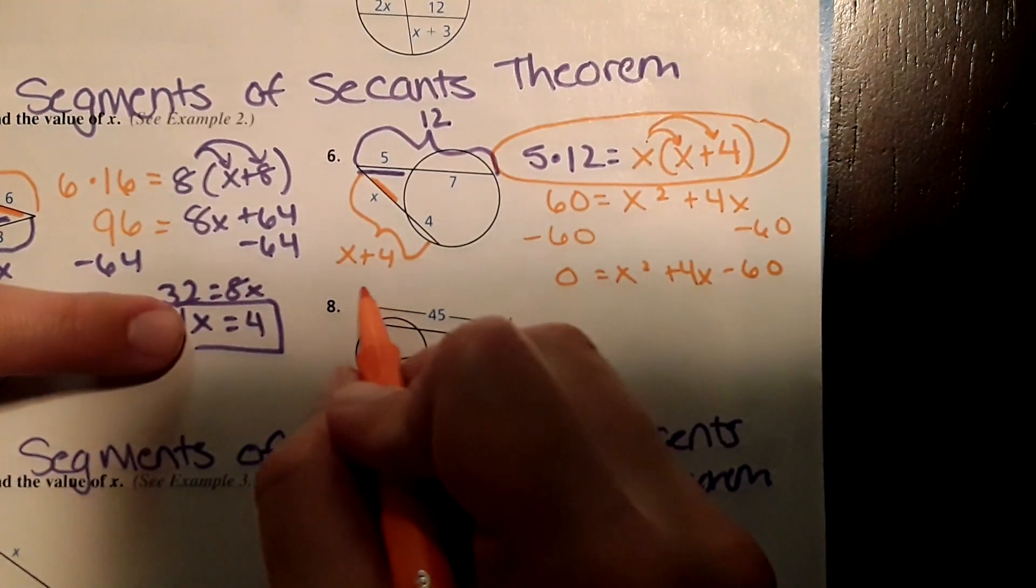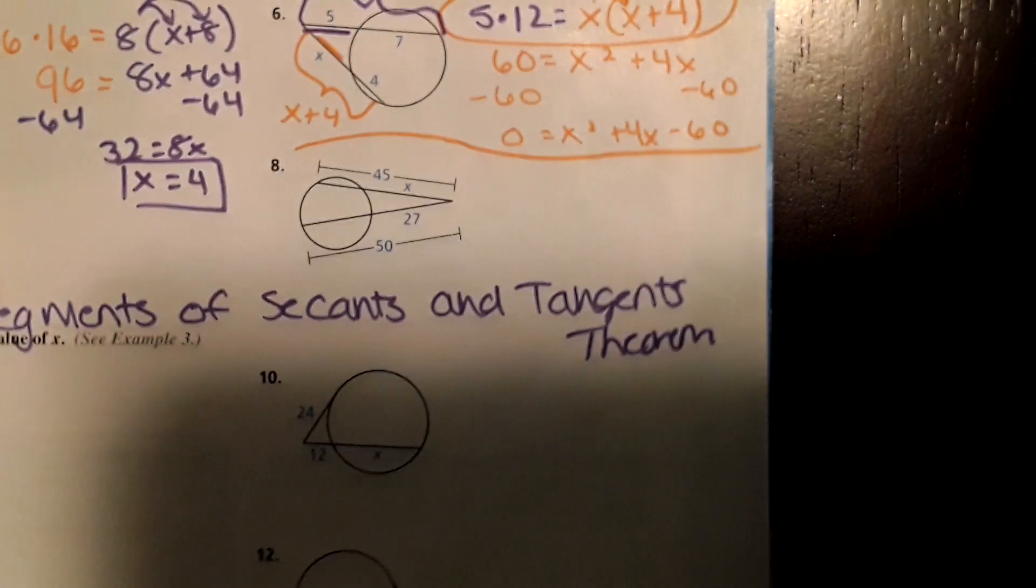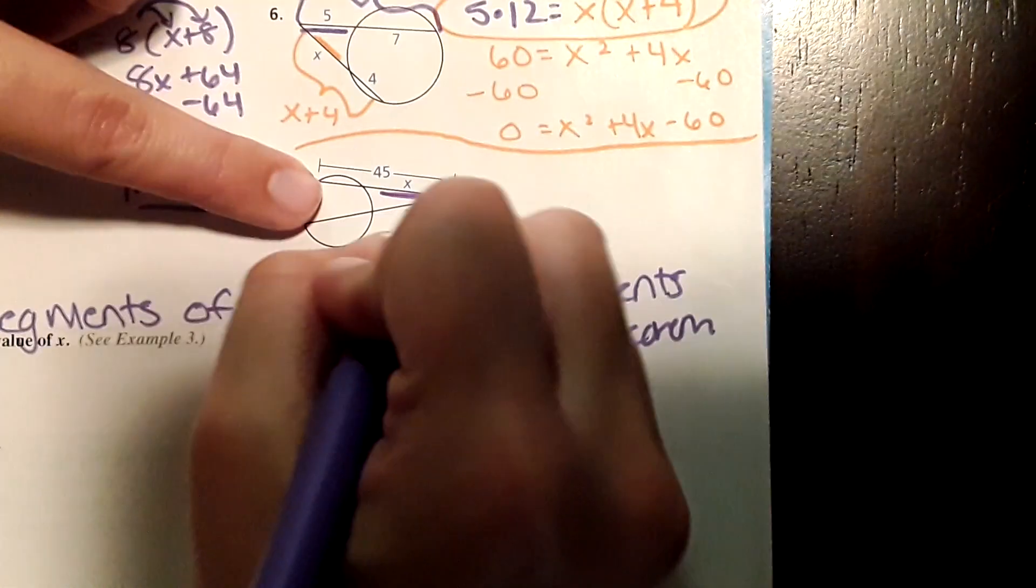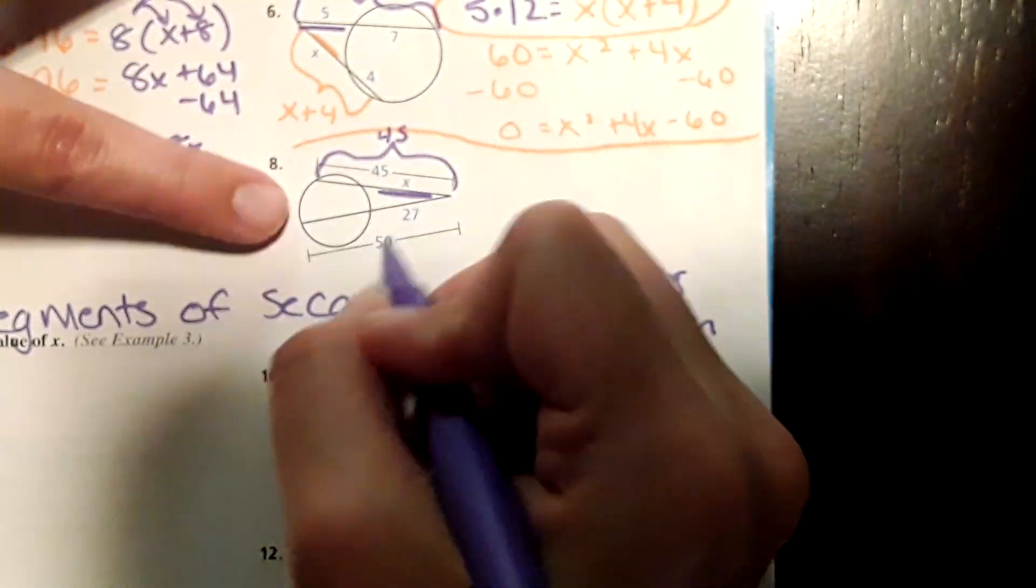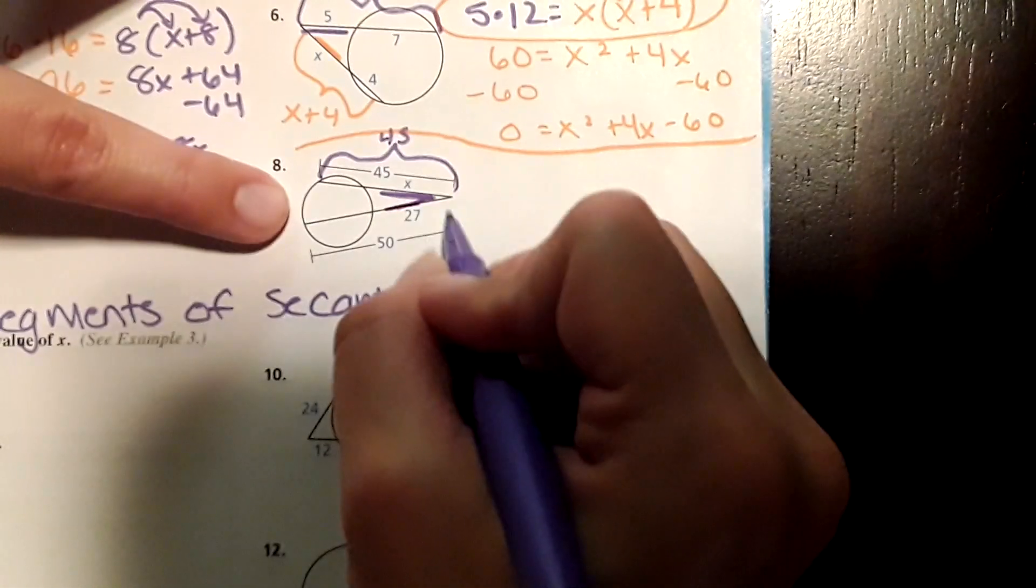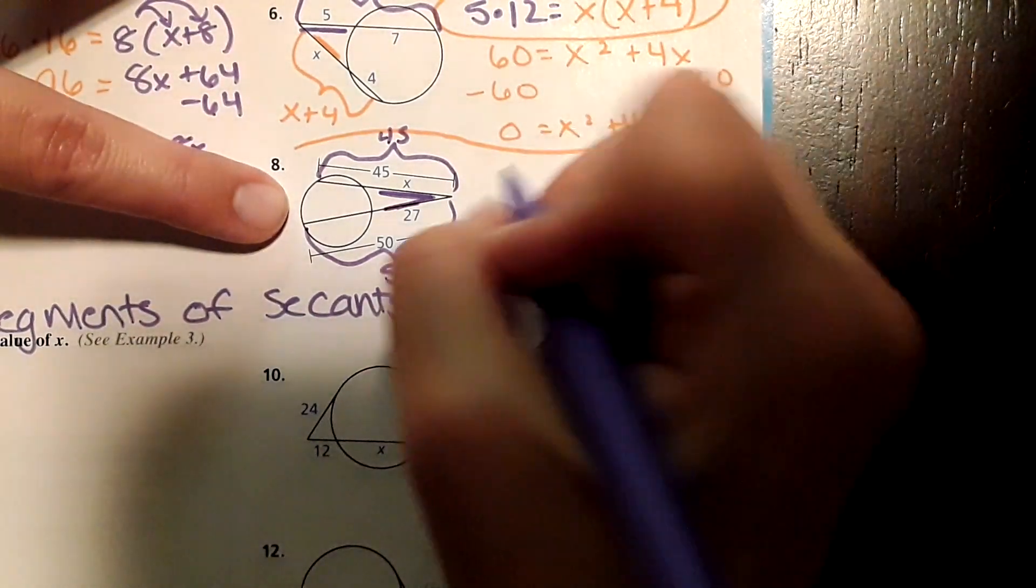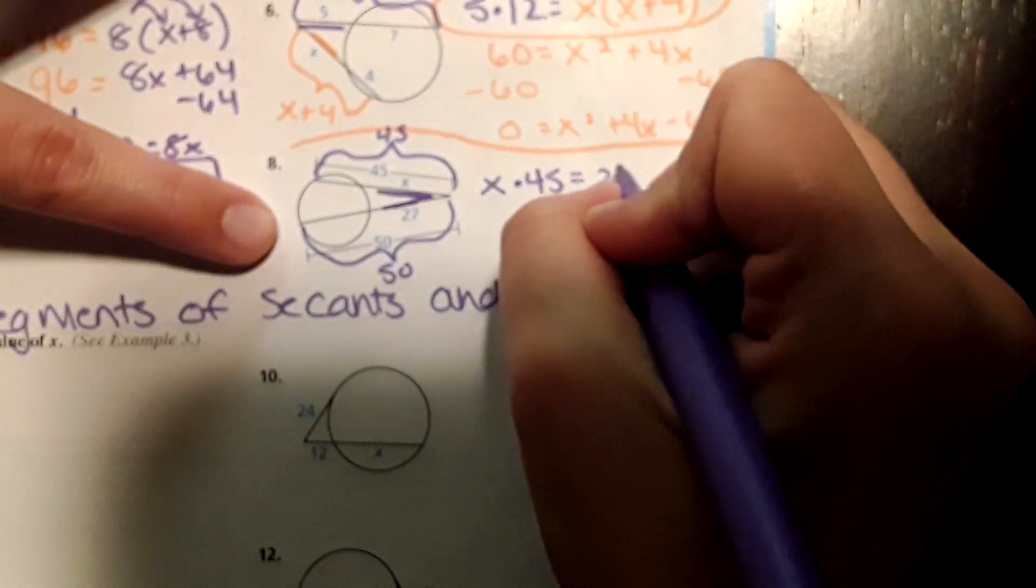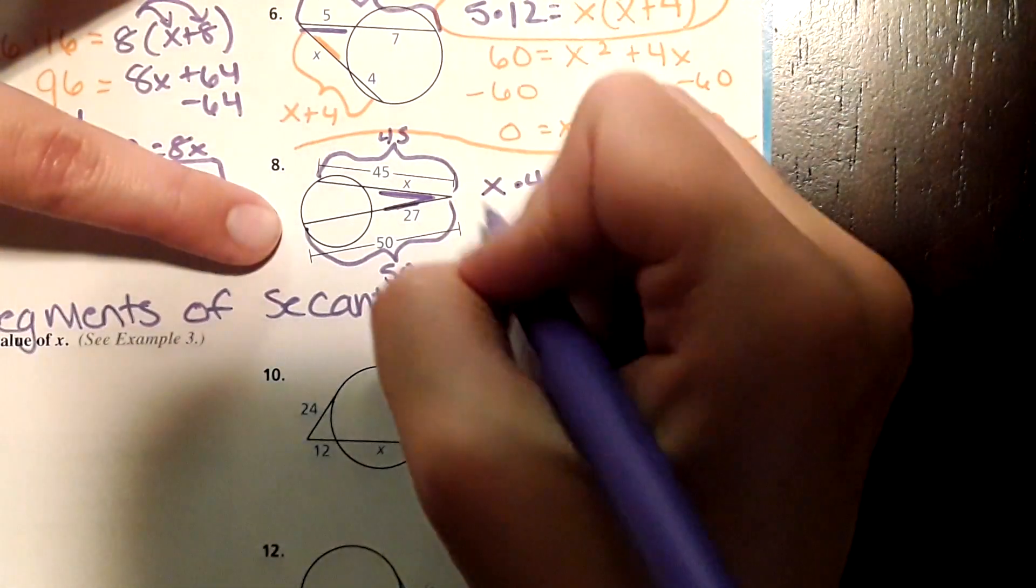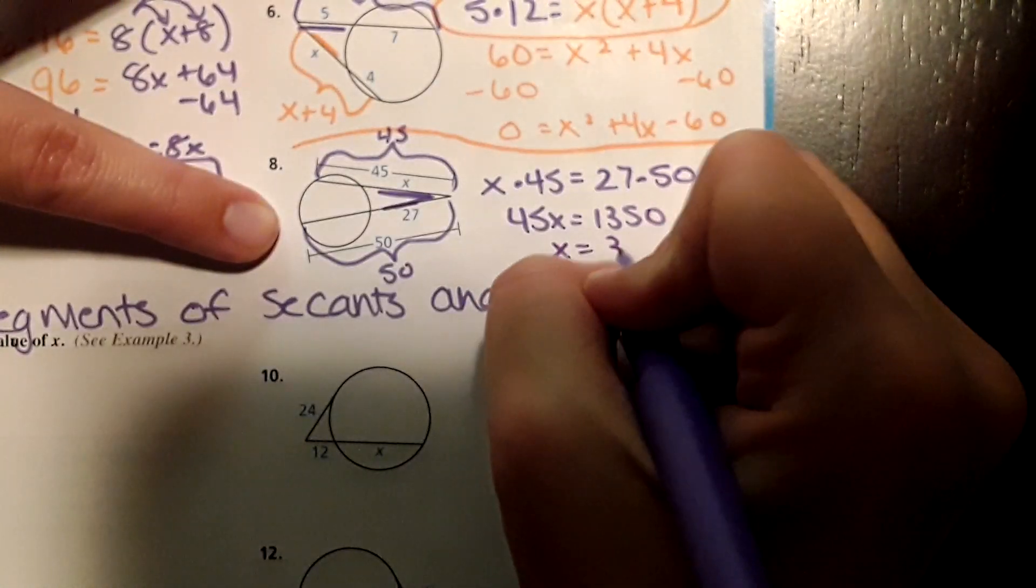Number 8: same thing, this shorter segment times the entire thing, which they're saying is 45, and then again the shorter segment, 27, times the entire thing, which they're saying is 50. So we can do X times 45 equals 27 times 50. 45X equals 1350, and then X equals 30.